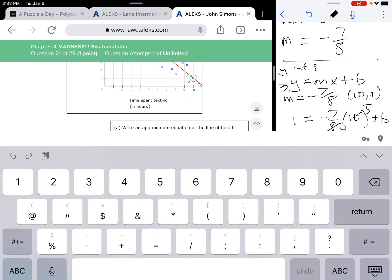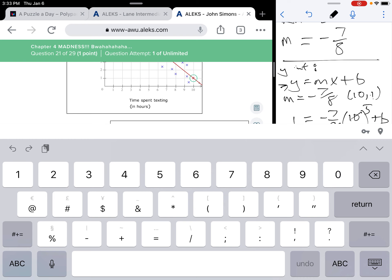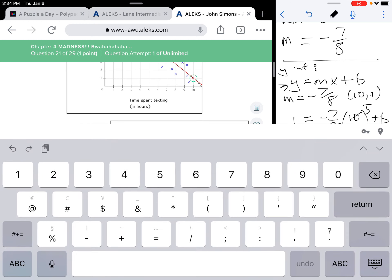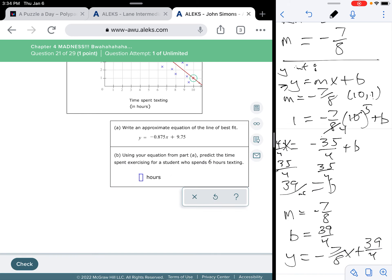So, it would be y equals negative 0.875x. And then plus our y intercept. And our y intercept is 39 fourths, which is 9 and 3 fourths. Well, I know 3 fourths is 0.75. So, it's going to be 9.75 plus 9.75. Hopefully, you know your fourths by now.